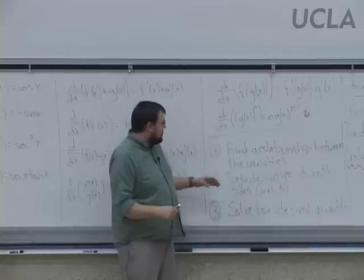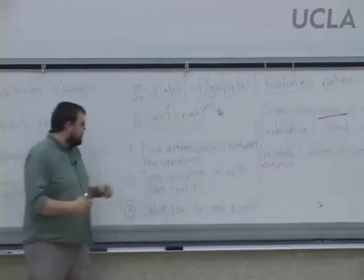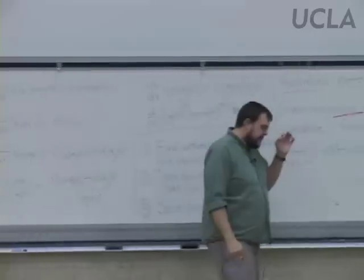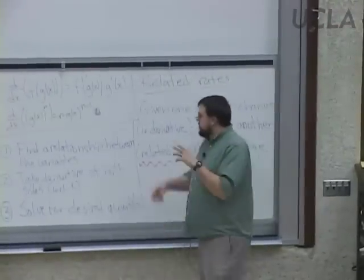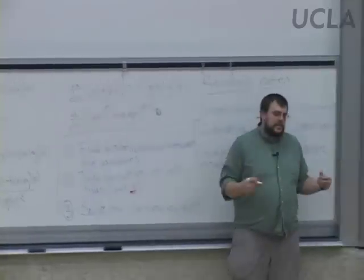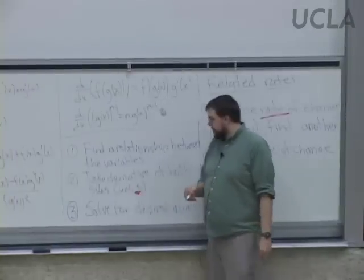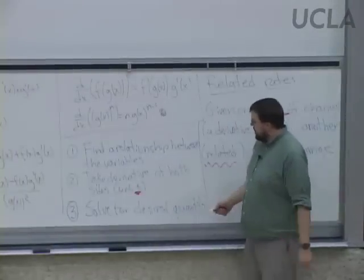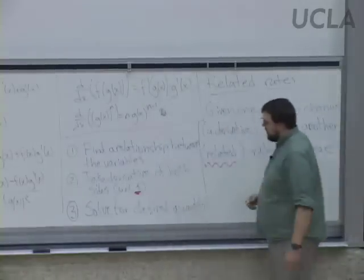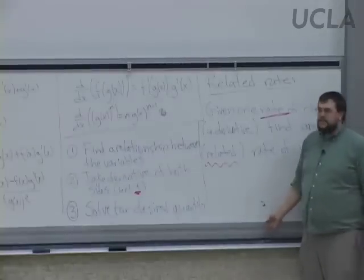After we've found the relationship between the variables, I'm not looking for the relationship itself — I'm looking for how the derivatives relate, so I take the derivative of both sides. The variable we take the derivative with respect to is almost always time t. Then we solve for the desired quantity, because we'll have information about one rate, an equation relating two rates, and we solve for the rate we want.